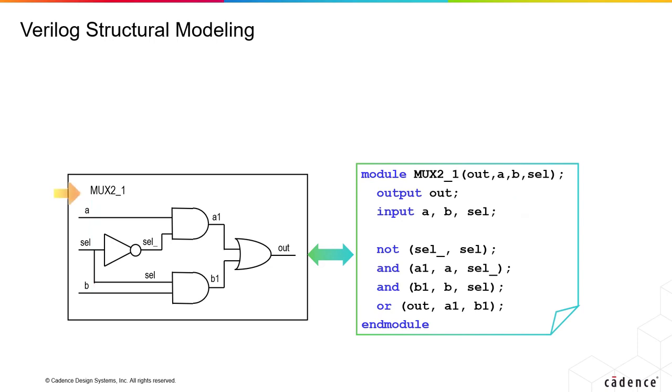In this schematic representation of a MUX on the left side, you can notice that the MUX is basically made up of four components: an inverter or NOT gate, then it has two AND gates, and an OR gate.